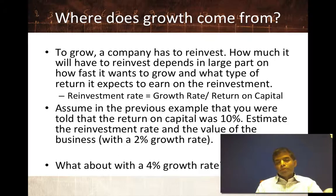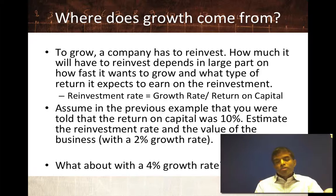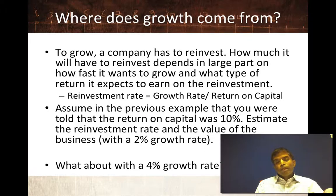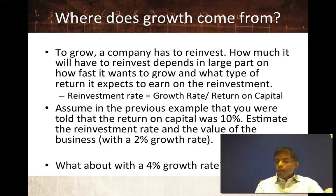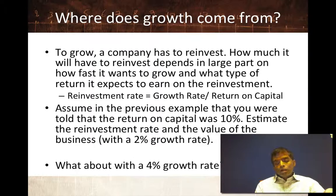Try 4% growth: reinvestment rate is 40% (4 over 10), so 40% of $120 million is $48 million out of the numerator — cash flow becomes $72 million. $72 million divided by (0.10 minus 0.04) is still $1.2 billion. Whatever I gain by growing faster, I'm exactly losing by having to put money back to get the growth.